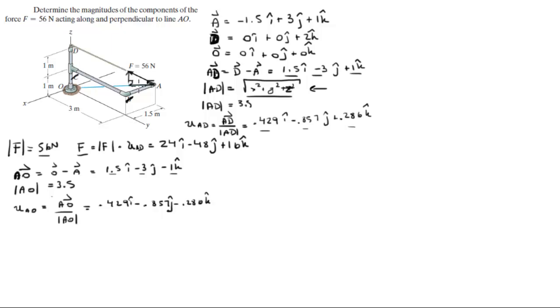So if you wanted to find this force right here which is going along AO and it's the component of F, all you got to do is F dot the unit vector AO. You know F to be 24I minus 48J plus 16K. And you know the unit vector AO which is found to be 0.429I minus 0.857J minus 0.280K.